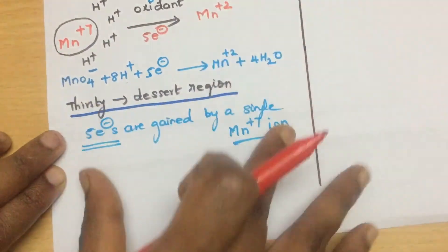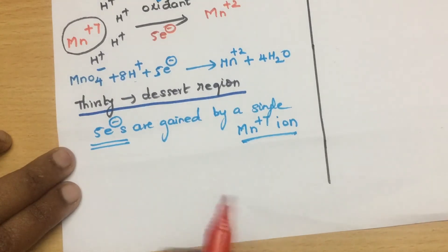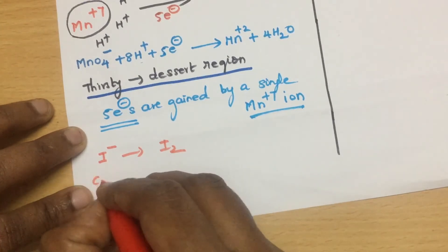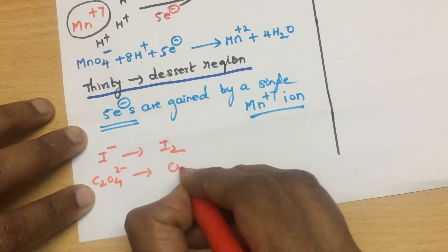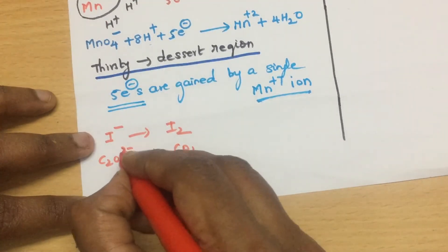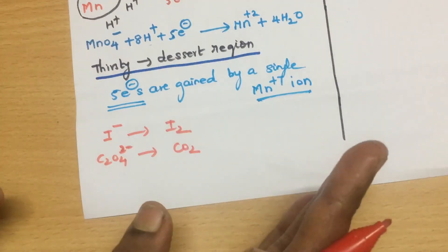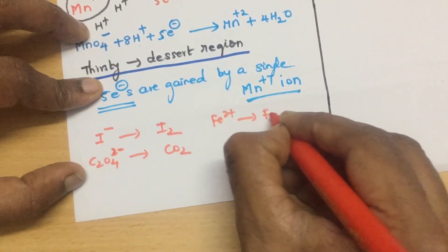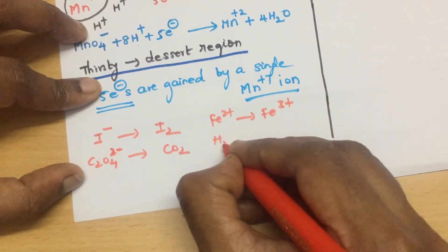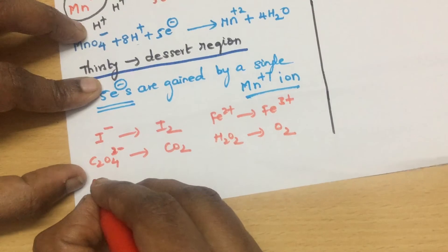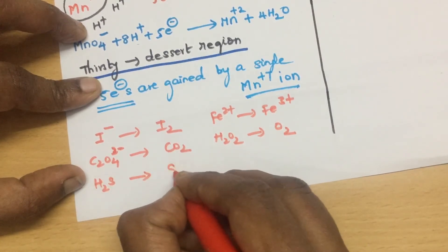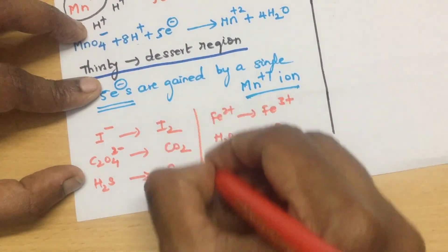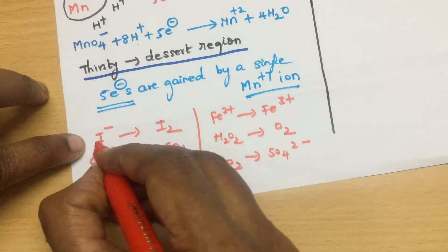I can give some examples of KMnO4 in acidic medium. The species involved: I- will get converted to I2, your oxalate is another example. Fe2+ will get converted to Fe3+, hydrogen peroxide will convert to oxygen, and H2S will convert to sulfur. These are the basic examples. For some special reactions, the products are given directly.